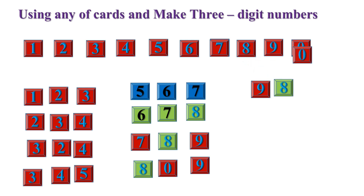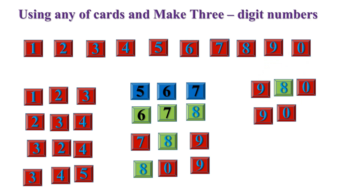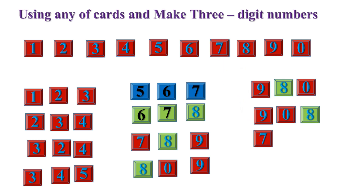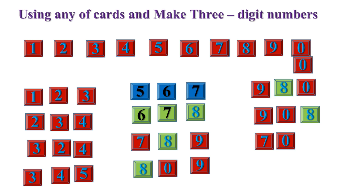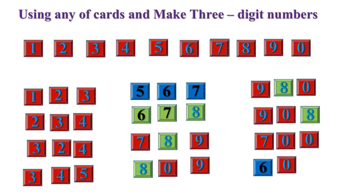Cards six, nine, zero — the number is six hundred and ninety. Cards nine, zero, eight — the number is nine hundred and eight. Cards seven, zero, six — the number is seven hundred and six. Cards six, zero, one — the number is six hundred and one.